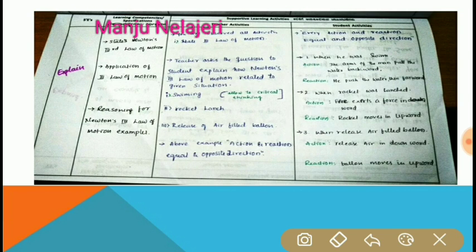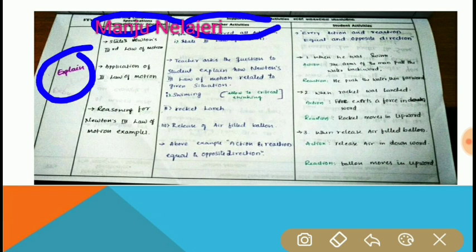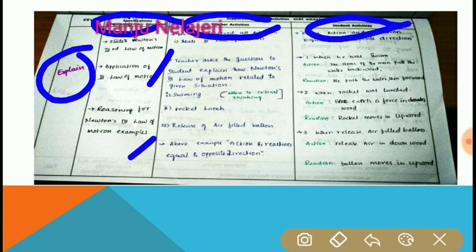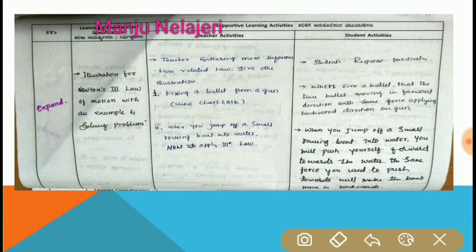After Explore, Explain is the third part of the PIES-based lesson plan and is very important. The same structure applies: learning competencies, teacher activity, and student activity. For example, learning competencies include applications of Newton's laws of motion — recognizing Newton's laws. Suitable activities are conducted in the teacher activity, and students gain information through the student activity.